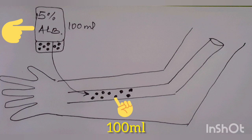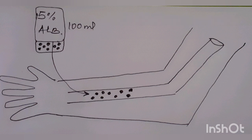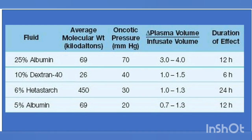Colloid fluids with a COP of more than 30 mmHg are hyperoncotic fluids, meaning their COP exceeds that of plasma, and they produce increments in plasma volume usually greater than the infusate volume. This is most apparent with 25% albumin, which has a COP of 70 mmHg and produces a plasma volume increment 3 to 4 times greater than the infusate volume — meaning 100 ml of 25% albumin increases plasma volume by 400 ml.